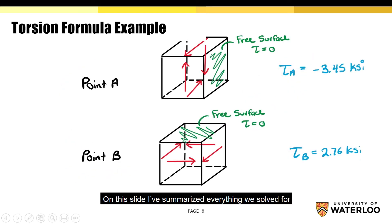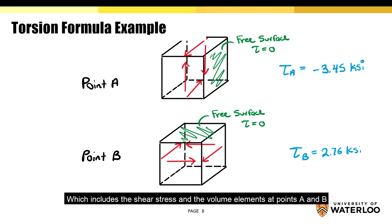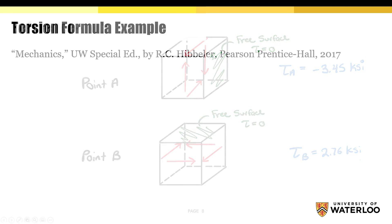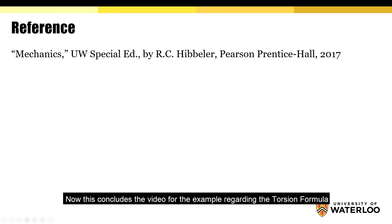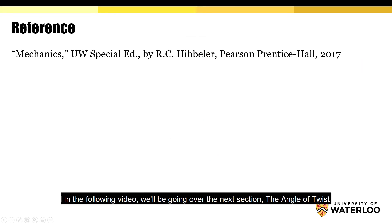On this slide, I've summarized everything we solved for, which includes the shear stress and the volume elements at points A and B. This concludes the video for the example regarding the torsion formula. In the following video, we'll be going over the next section: the angle of twist.